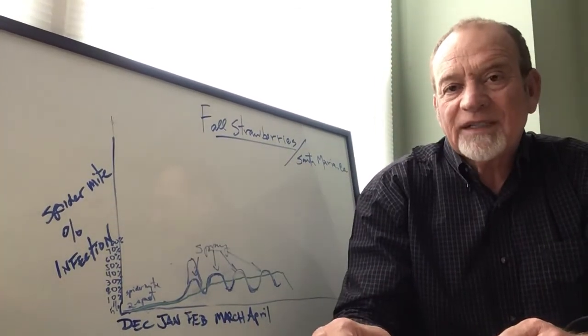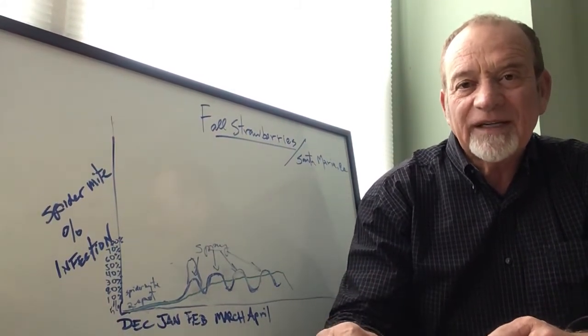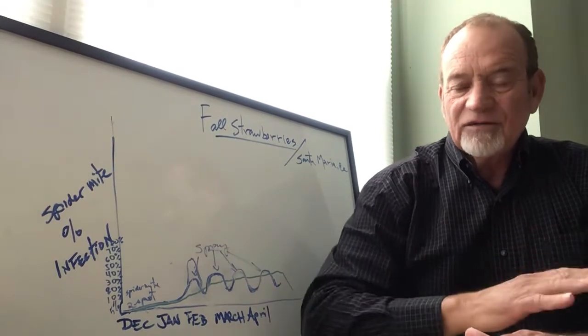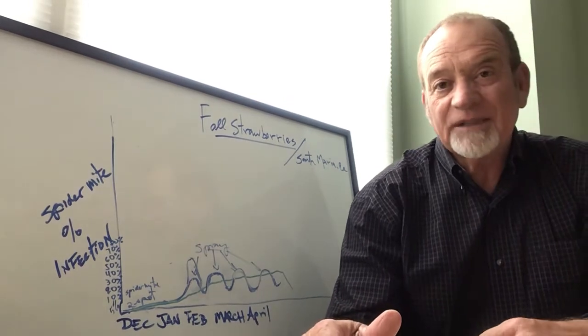The fight is to have a 50% ratio: 50% two-spots, 50% persimilis or californicus combined. Then no more sprays. I stop spraying after that, except on hot spots only.